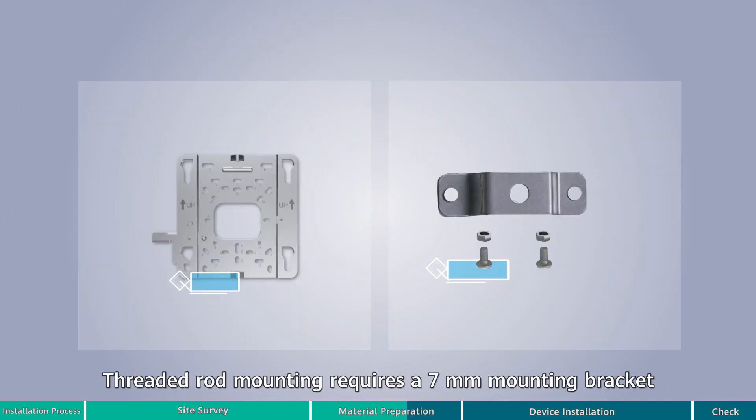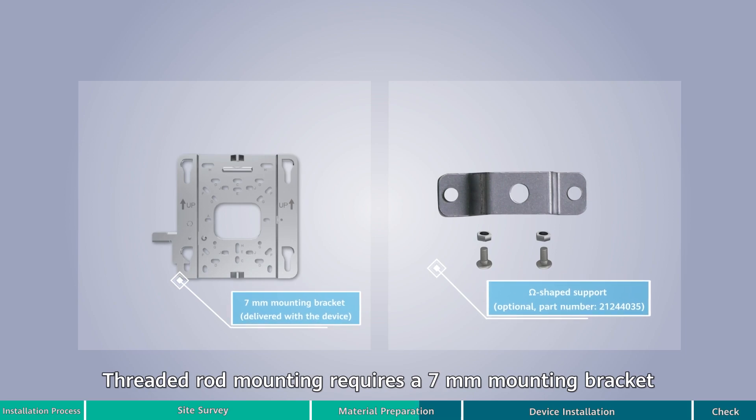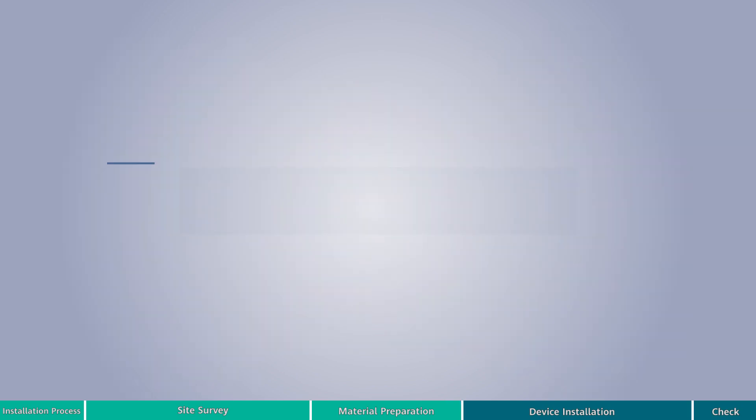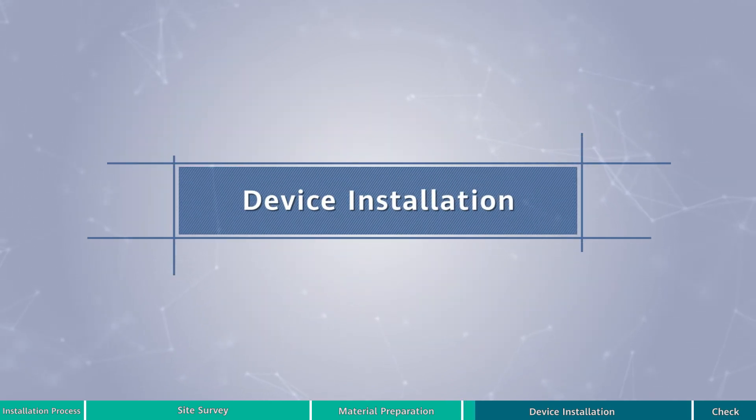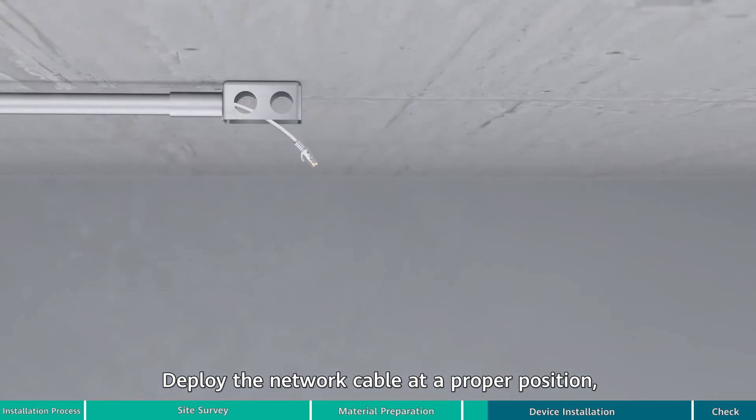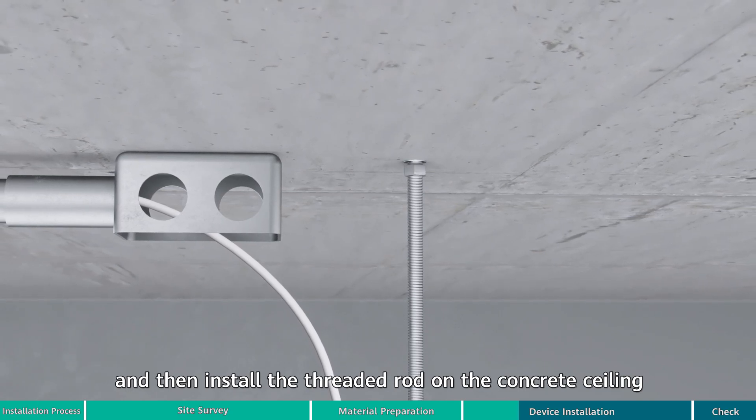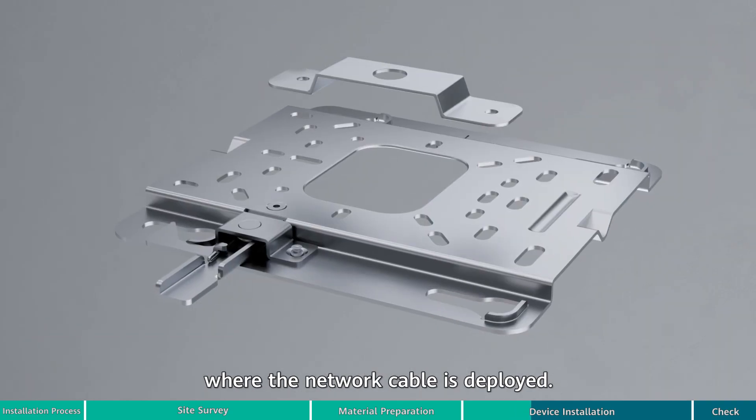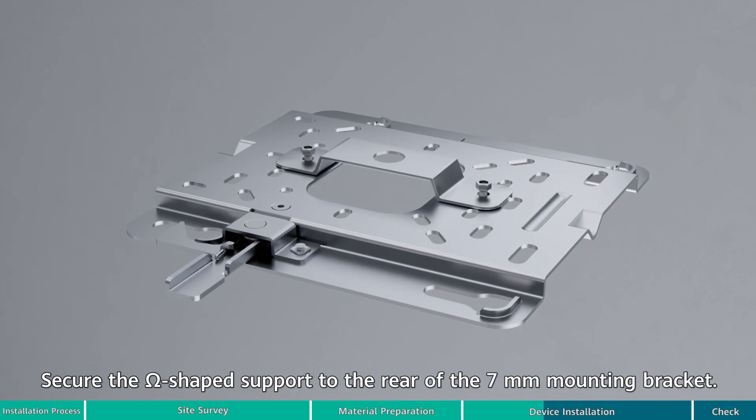Threaded rod mounting requires a seven millimeter mounting bracket and omega-shaped support. Deploy the network cable at the proper position, then install the threaded rod on the concrete ceiling where the network cable is deployed. Secure the omega-shaped support to the rear of the seven millimeter mounting bracket.